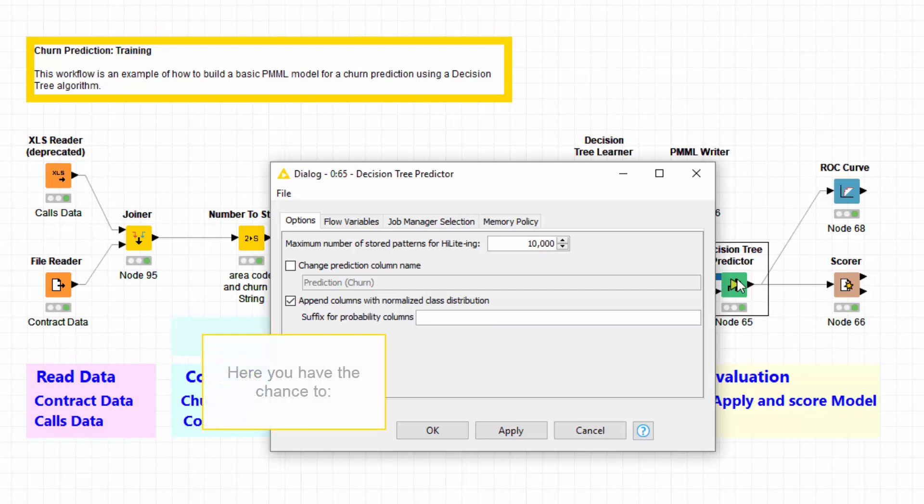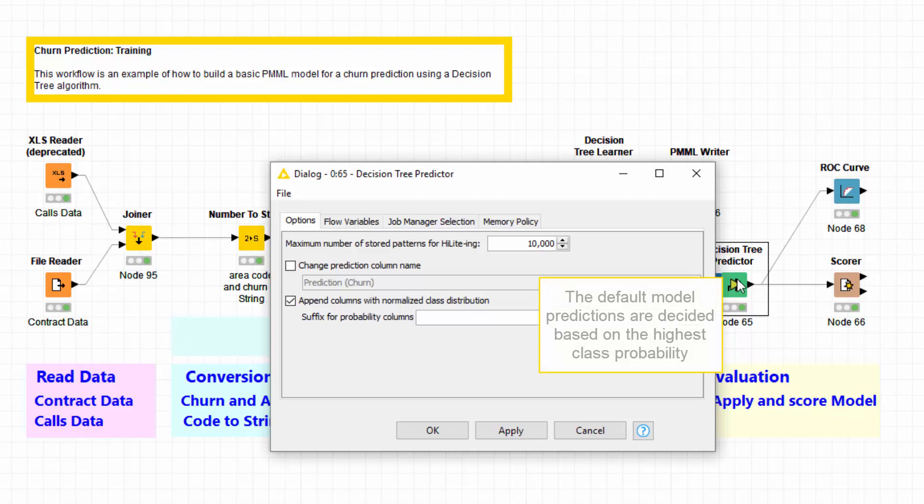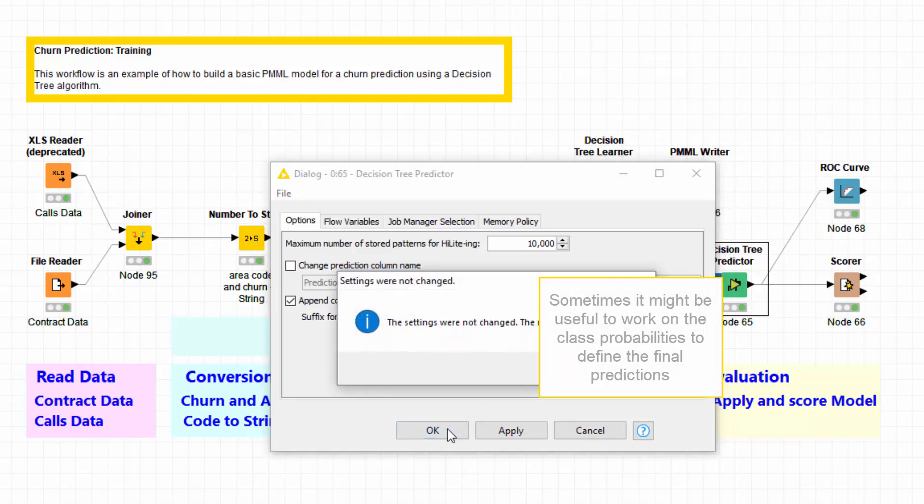However, here you have the chance to output the class probabilities calculated through the model, change the name of the output column containing the predictions. The default final predictions are decided based on the highest class probability. However, sometimes it might be useful to work again on the class probabilities to define the final predictions.